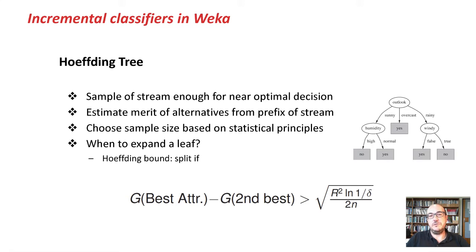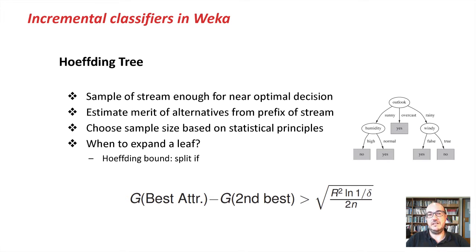The standard decision tree is not incremental — it needs to have all the data set in memory. The Hoeffding tree is the state of the art in incremental decision tree learning. It was proposed by Pedro Domingos and his group around 2000. The difference from standard decision trees is that in the standard approach, when deciding whether to split, you look at the data in memory, compute the statistics, and decide whether to split.